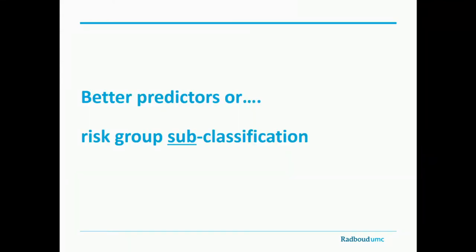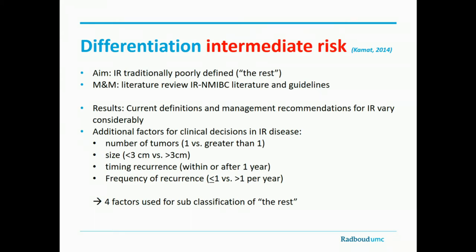Can we subclassify the intermediate risk group? It's probably the largest group we treat. Factors that help subclassify intermediate risk include: number of tumors — one versus more than one; size — smaller or larger than three centimeters; timing of recurrence — within a year or after a year; and frequency of recurrence — less than once a year or more often. If you have none of these bad factors, it's almost low risk. If you have all of them, you should probably go for BCG. This subclassification has potential therapeutic consequences.